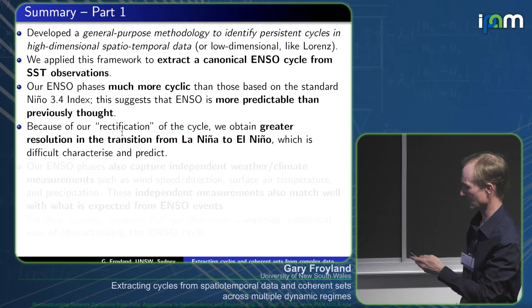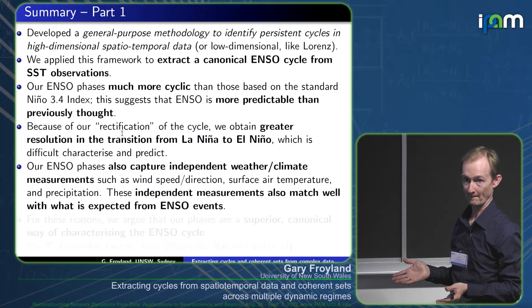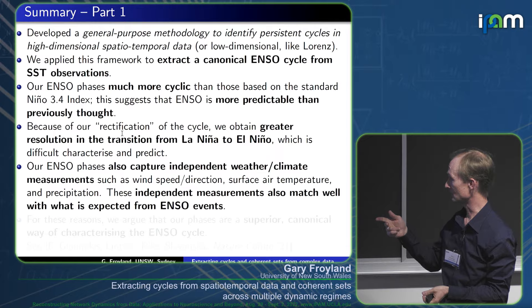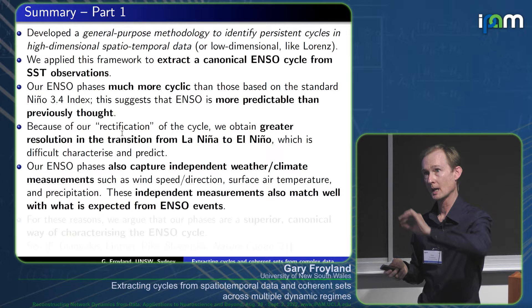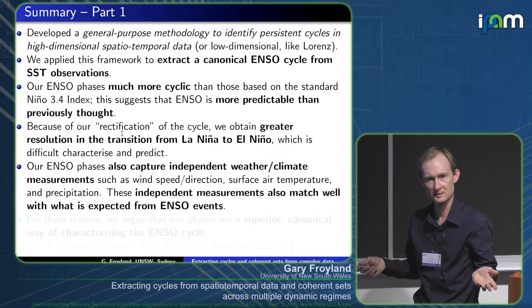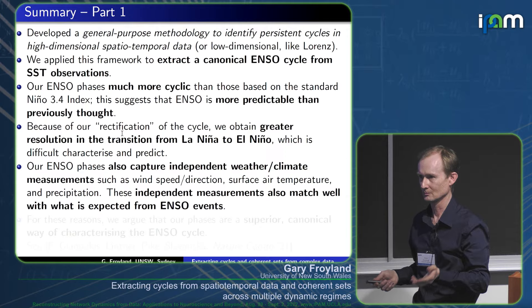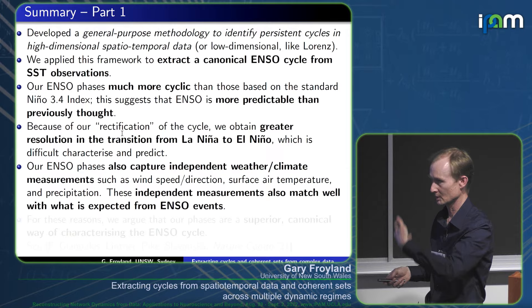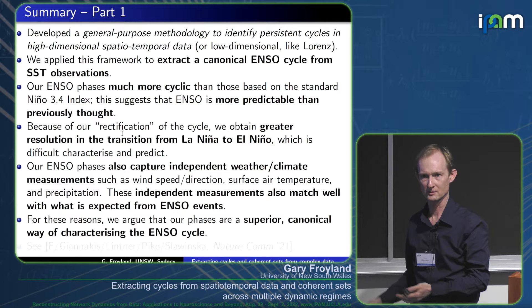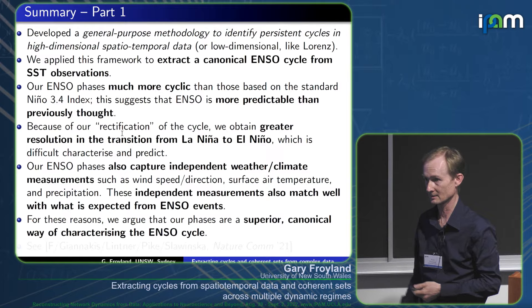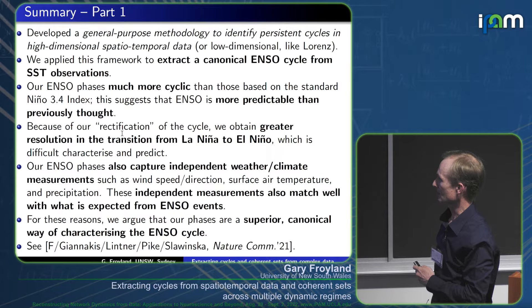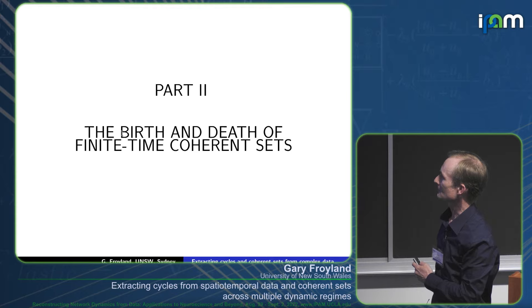All our phases were built on sea surface temperature, but you have other observations — air pressure, wind speed, surface air temperature, precipitation. Making composite images for those fields using the phases built from temperature, they all behave as expected for an ENSO cycle. For all these reasons, we believe our ENSO cycle is an improvement over the Niño 3-4 way of categorizing El Niño. This came out last year in Nature Communications.